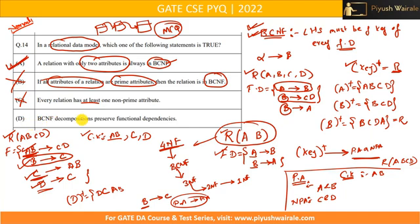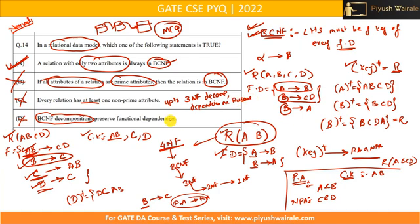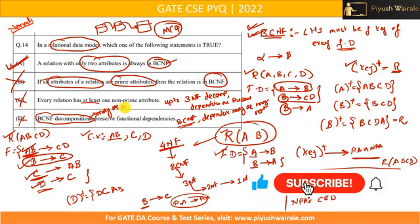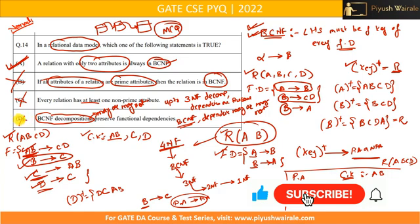Option D says: BCNF decomposition preserves functional dependencies. This is also not correct. There can be a BCNF decomposition that does not preserve dependencies. Remember this important point: up to 3NF decomposition, dependencies are preserved. But in the case of BCNF decomposition, dependencies may or may not be preserved — we cannot guarantee it.